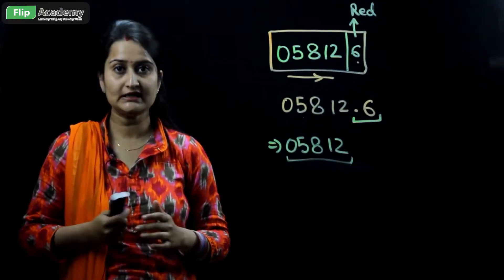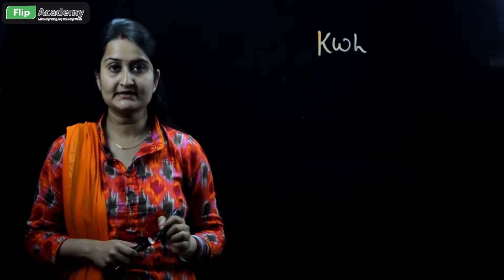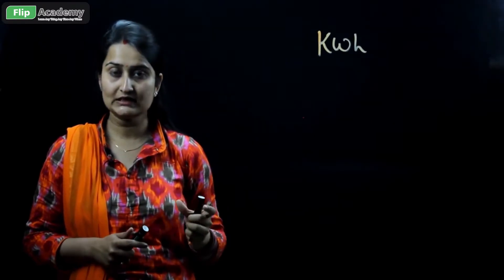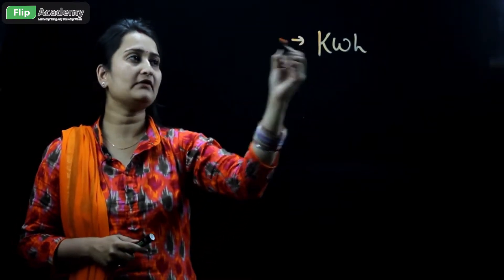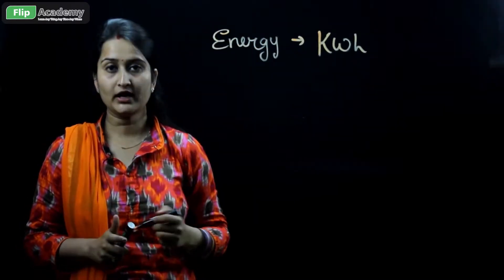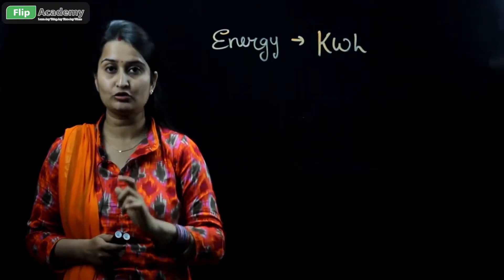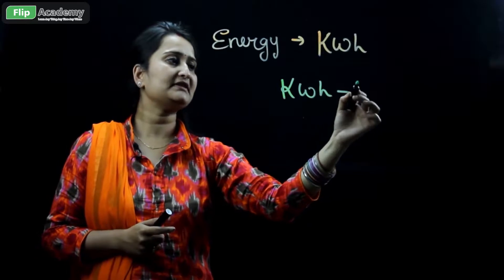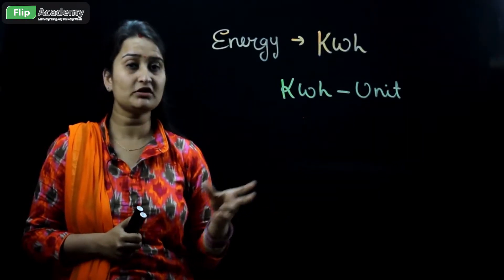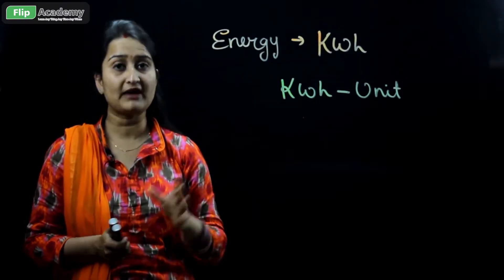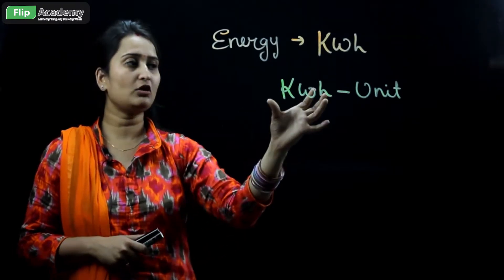Now I will tell you how this reading comes and how we calculate the electricity bill. The first fundamental is that the electricity meter always gives the reading in kilowatt hour. The reading 05812 that you saw is in kilowatt hour, which represents electrical energy. The kilowatt hour in the meter represents the unit — that is, 1 kilowatt hour equals 1 unit, 2 kilowatt hours equals 2 units, 5 kilowatt hours equals 5 units, and so on.